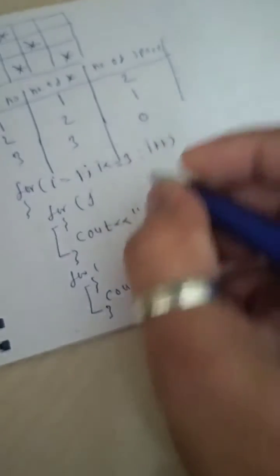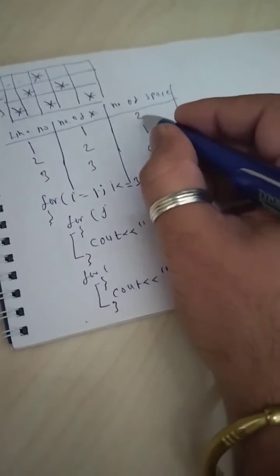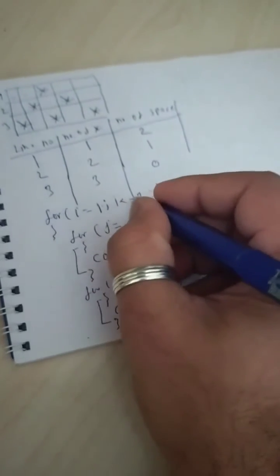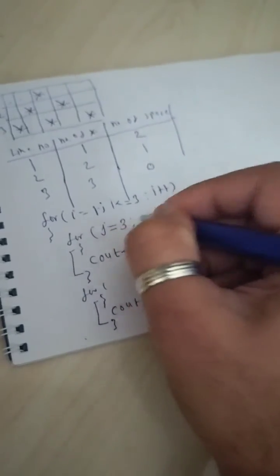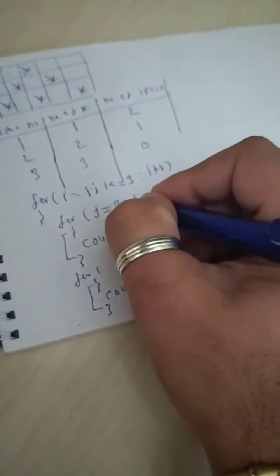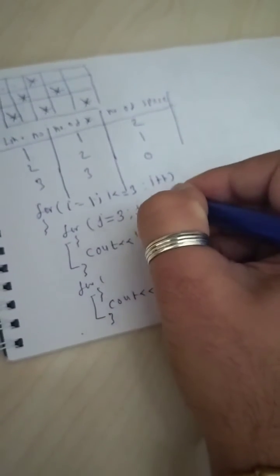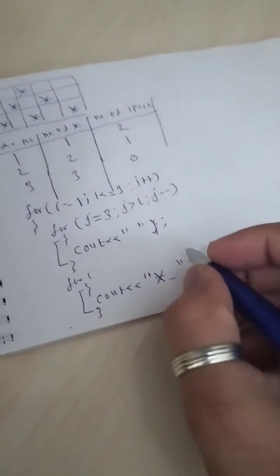I have decided the outer loop will start from one and end up to three. Now, how many spaces do I need to print? In the first line I need to print two spaces. I will utilize the value of i — I will initialize J with three. The condition is that J should be greater than i, and J minus minus.